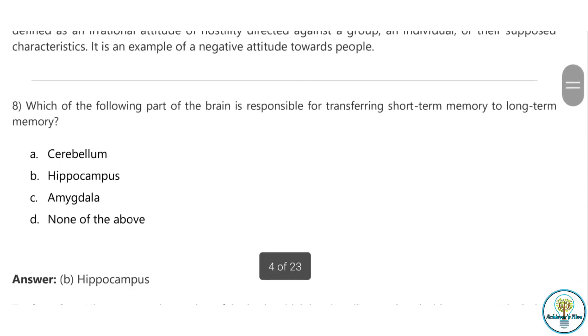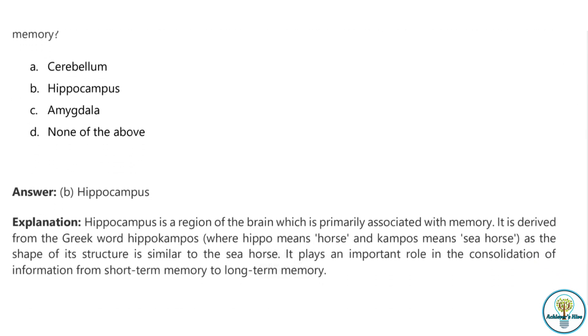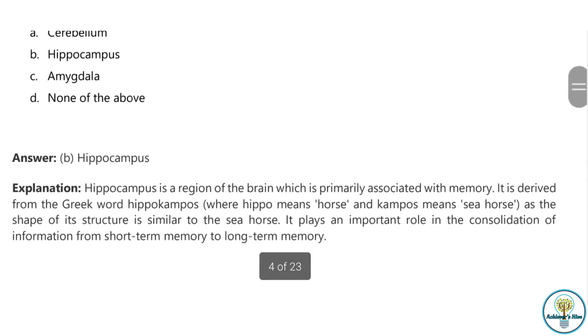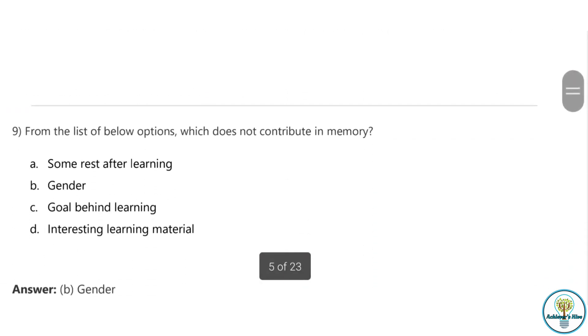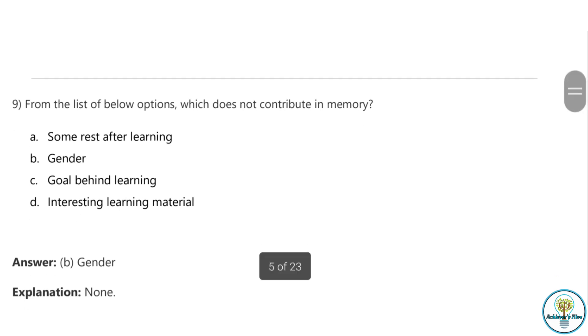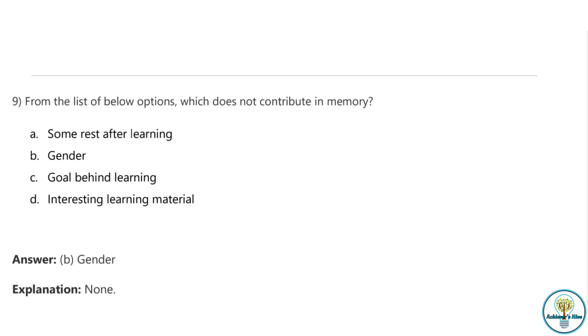Question eight: Which of the following part of the brain is responsible for transferring short-term memory to long-term memory? Hippocampus is the part of the brain that is responsible for this. The hippocampus is a region of the brain primarily associated with memory. It is derived from the Greek word where hippo means horse and campos means seahorse, as the shape of the structure is similar to the seahorse.